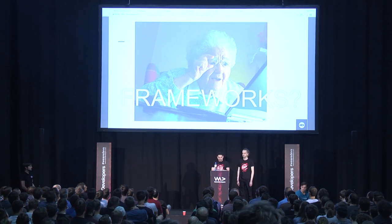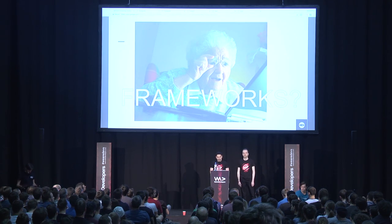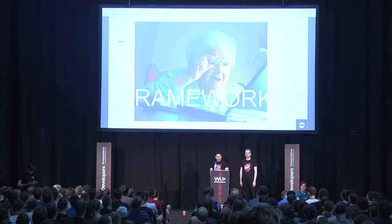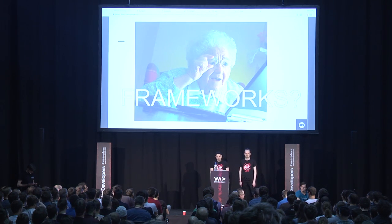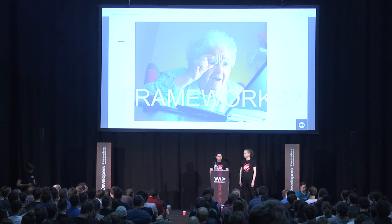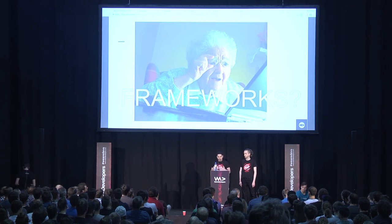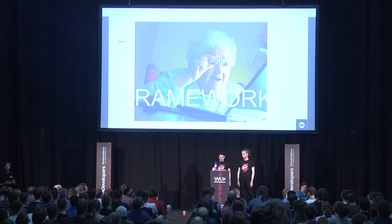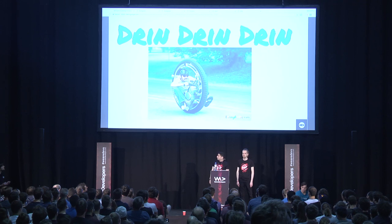Frameworks. A software framework is an abstraction that provides generic functionality with selective changes to it — making it easy to build and deploy applications. If you're trying to fix an issue, most probably somebody already came up with a solution — maybe the same, maybe similar. Most of the time there is no need to start things from scratch. You just don't need to reimplement things, but rather reuse. Just be careful not to misuse.